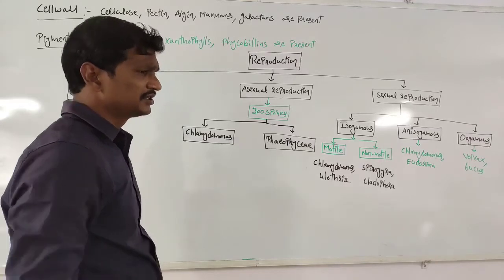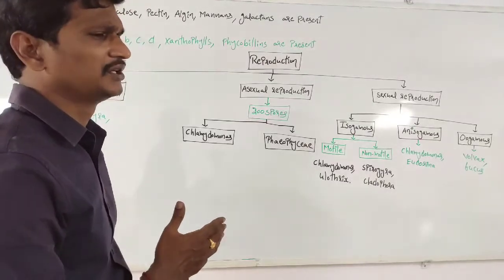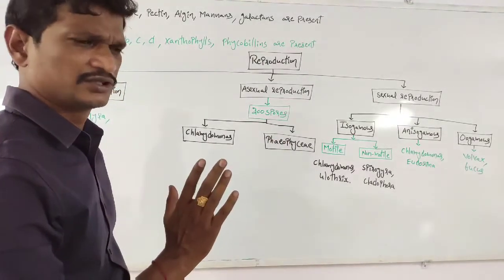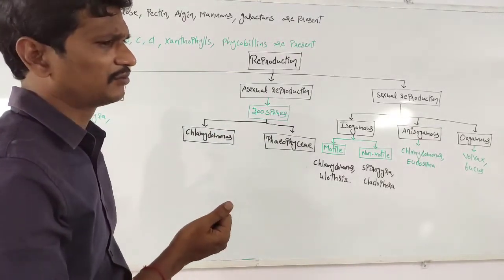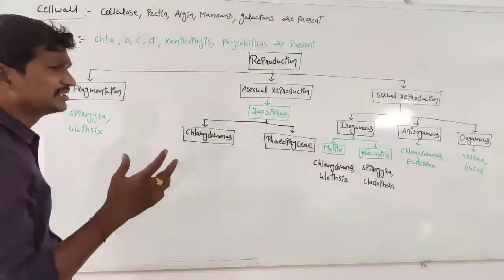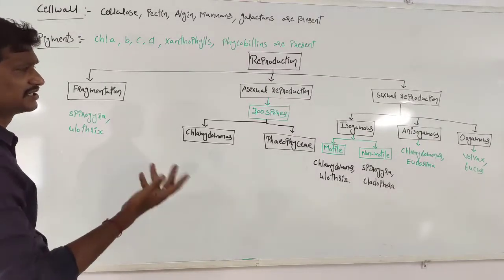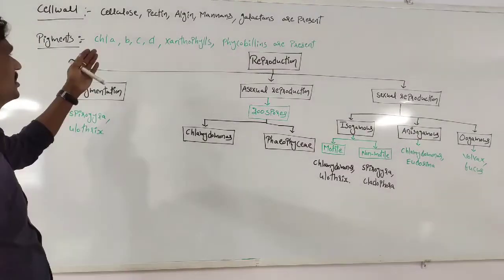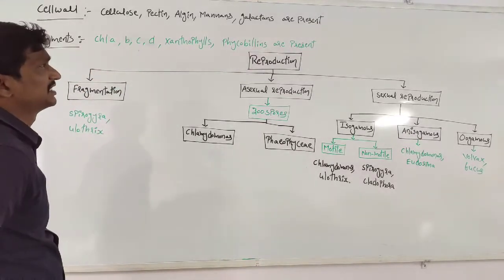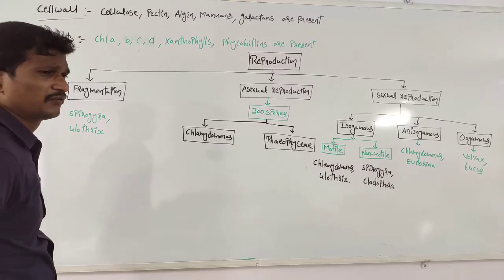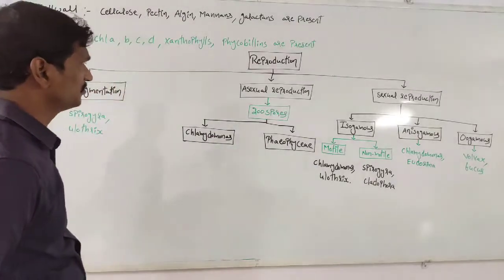In Rhodophyceae, one type of cell wall composition; in Chlorophyceae, another type. But in all these cell walls some common components are there: cellulose is present, pectin is present, algin may or may not be present. Also mannans, galactans, and sulfated esters are also present in various combinations depending on the type of algae.